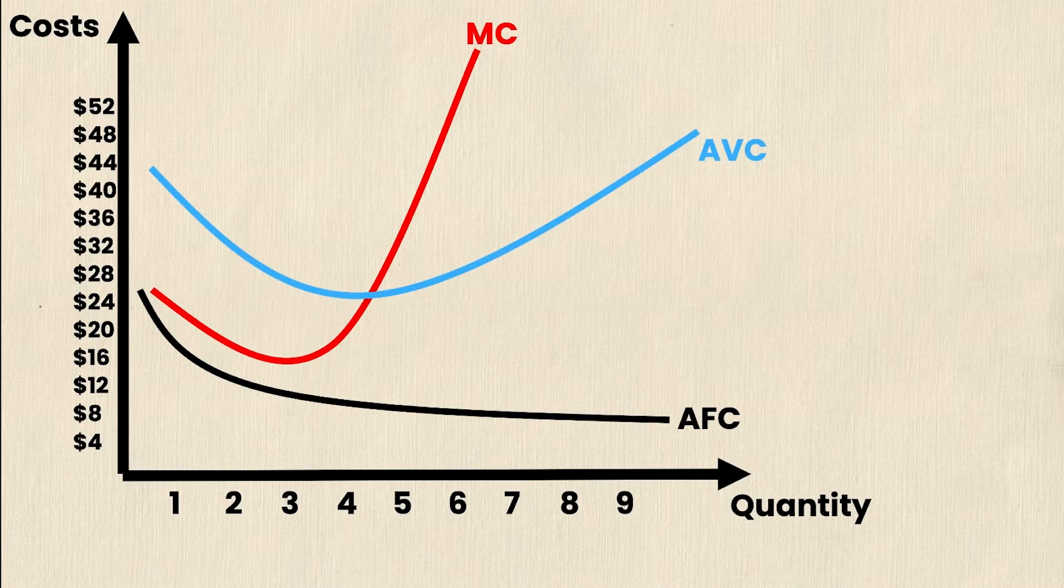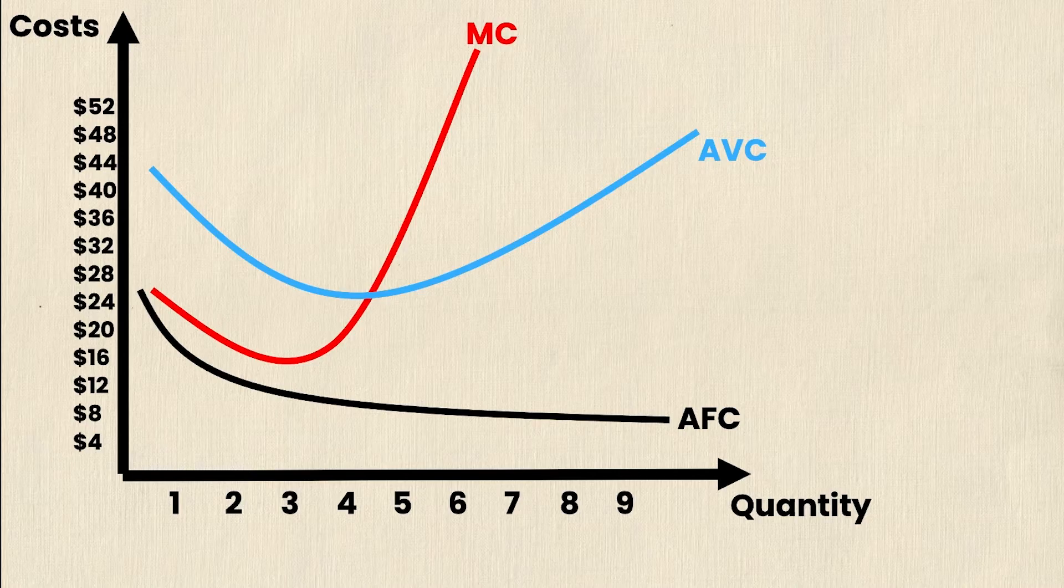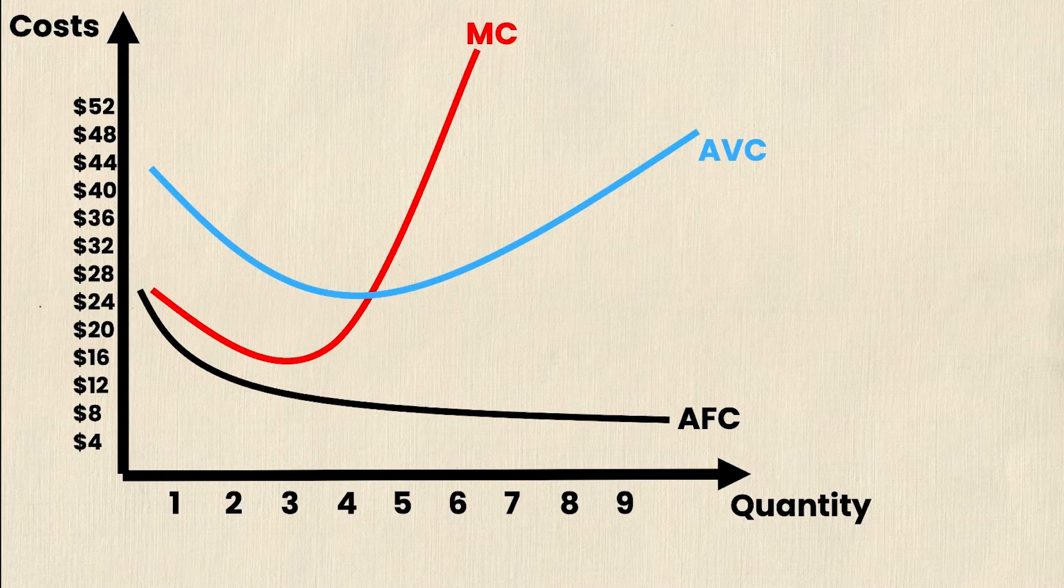Next, we've got the average variable cost. You'll notice it takes a U shape, but it actually intersects the marginal cost curve at its exact minimum. This means that if the marginal cost is ever less than the average variable cost, then the average variable cost must be decreasing. On the other hand, if the marginal cost is above the average variable cost, then the average variable cost must be increasing. That just means it intersects exactly at the average variable cost's minimum.